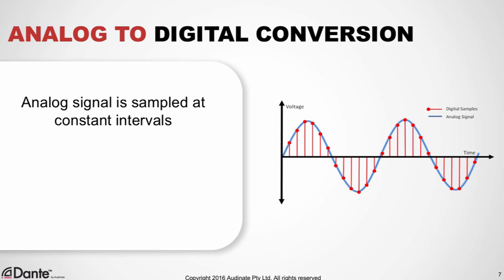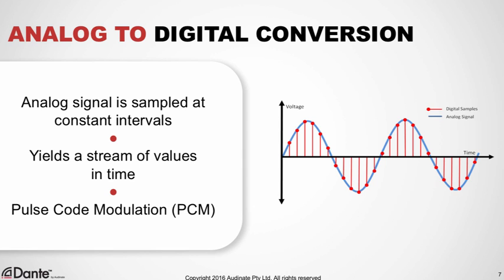When we convert analog audio to digital, the analog signal is sampled at constant intervals of time. At each interval, the amplitude of the analog signal is captured and then represented as a number. This method produces a stream of values in time, and is known as pulse code modulation, or PCM. It is the most common format for digital audio, and has been used in CD players since the very beginning.